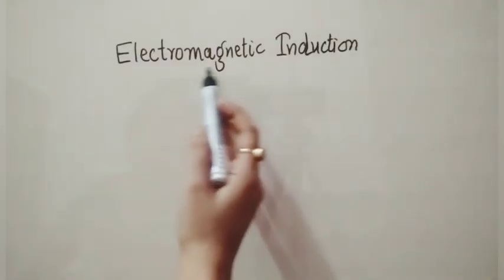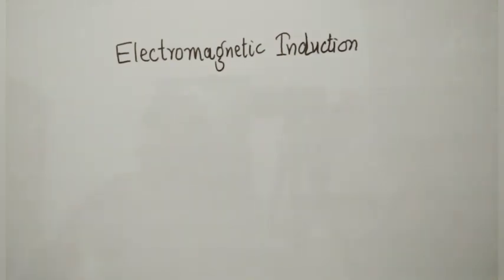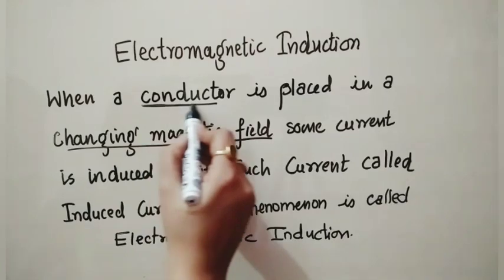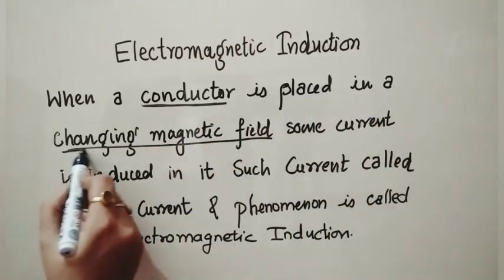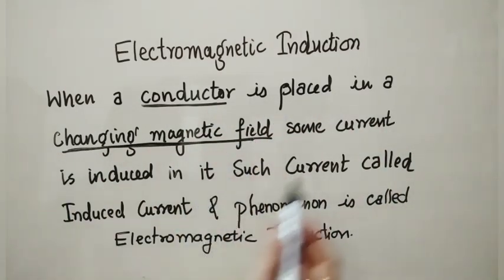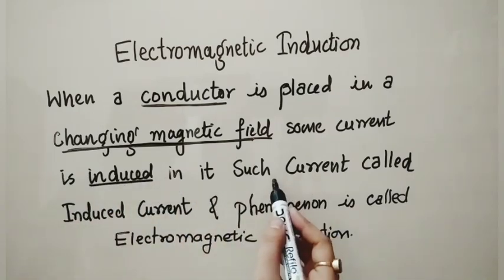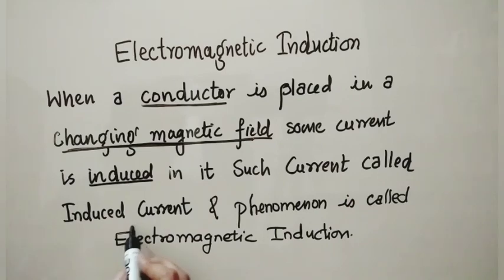In this video, we are going to discuss Electromagnetic Induction. When a conductor is placed in a changing magnetic field, some current is induced in it. Such current is called Induced Current and the phenomenon is called Electromagnetic Induction.